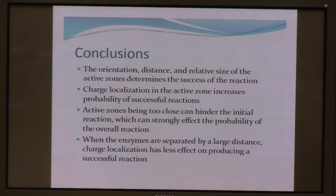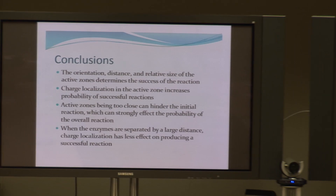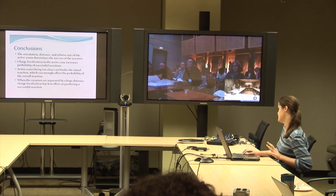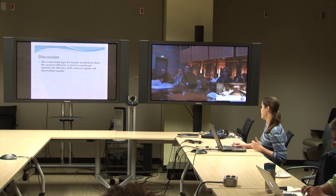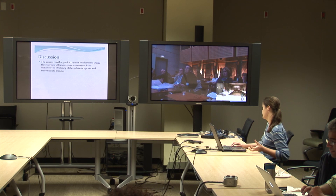As expected, the orientation, distance, and relative sizes of these active zones determines the success of the reactions, and charge localization was important for increasing probability. However, when the active zones are too close together, it can hinder the initial reaction, which can strongly affect the probability of the overall transfer. As we separate the enzymes by a large distance, the transfer is much less. Overall, this might argue for a mechanism where the enzymes move or rotate in order to control and optimize the efficiency of substrate uptake and subsequent transfer.